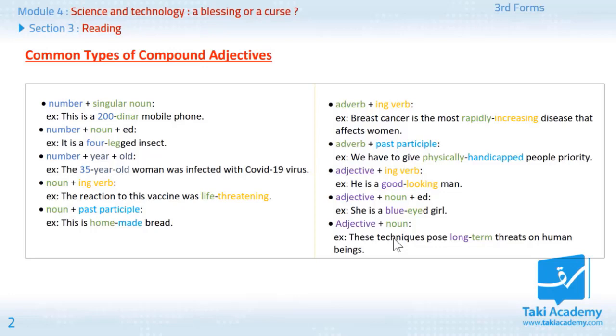Let's start with the first one. Here you have number plus noun. Here, I added singular noun. It's very important here. When you say it's a singular noun, it's not a plural noun. Example. This is a 200 dinar mobile phone.